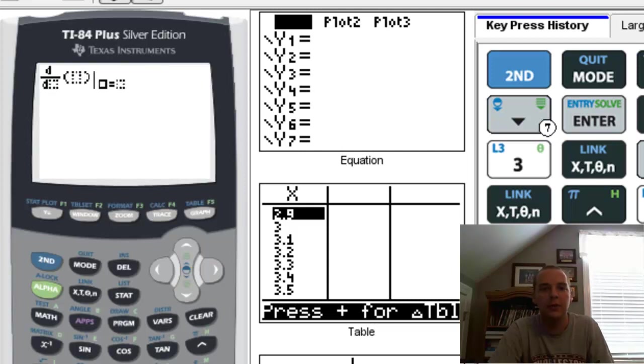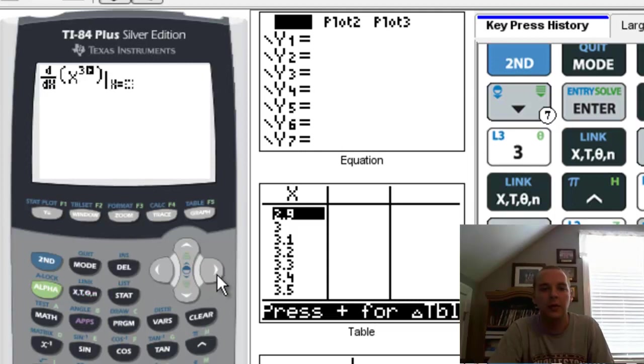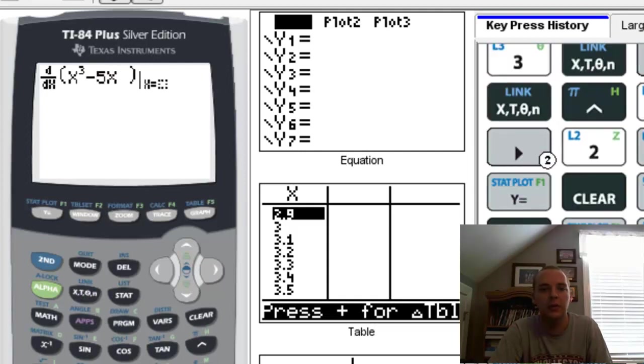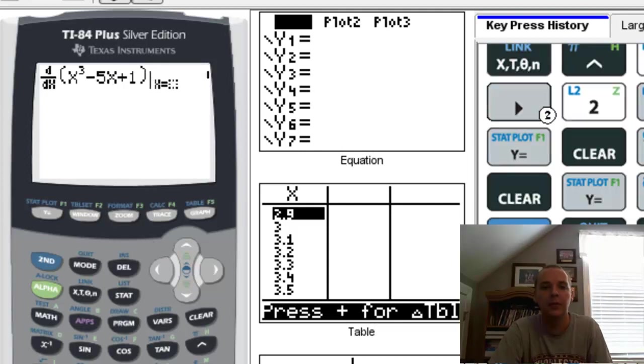You would just basically type in this function, so it says d/d blank, so we're going to take the derivative with respect to x of x cubed, get out of the exponent, minus 5x, there's an x plus 1. Differentiate this function with respect to x, but then it gives you a bar at x equals, and then it wants a certain place to find the derivative. So plug in a 2, our answer would be 7. So the derivative of this function with respect to x at 2 would be 7, that's the slope of f of x at 2.